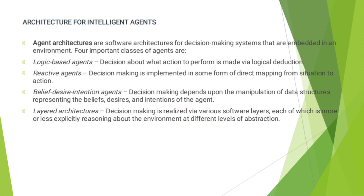Next, the Architecture of Intelligent Agent. The architecture for Intelligent Agent consists of four parts: Agent Architecture is divided into Logic-based Agent, Reactive Agent, Belief-Desire-Intention Agent, and Layered Architecture. Agent Architecture also refers to software architectures for decision-making systems that are embedded in an environment.